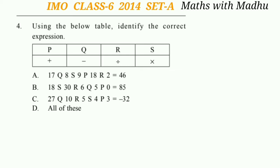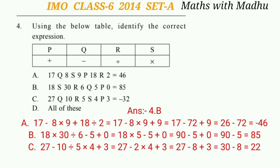Question 4: Using the given table, identify the correct expression. Option A gives 17 − 8 × 9 + 18 ÷ 2 = −46. Option B gives 18 × 30 ÷ 6 − 5 + 0 = 85, which is correct. Option C gives 27 − 10 ÷ 5 × 4 + 3 = 22. So the correct answer is option B.